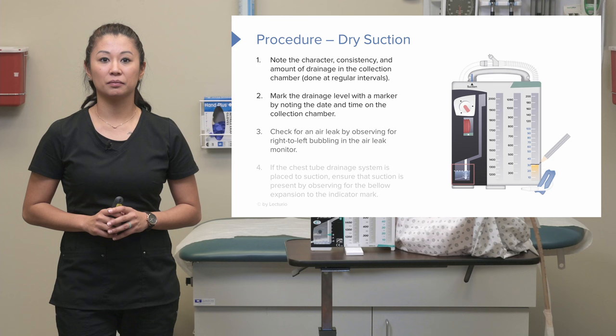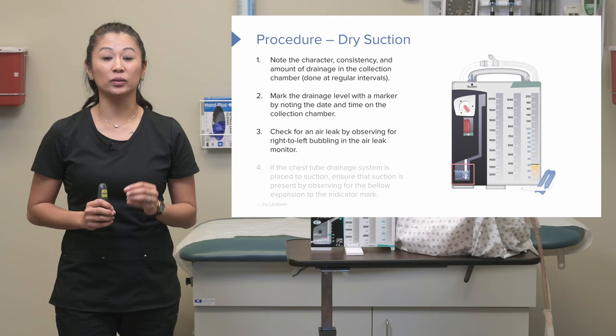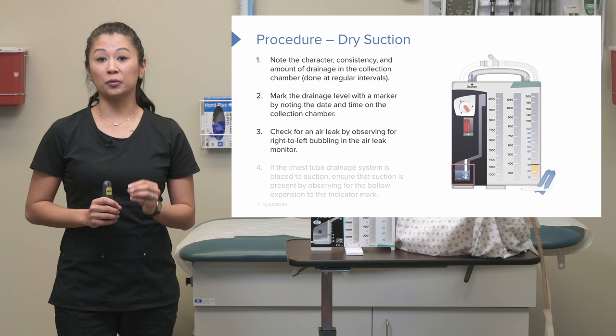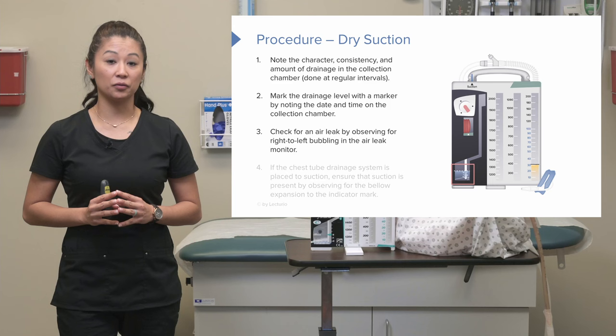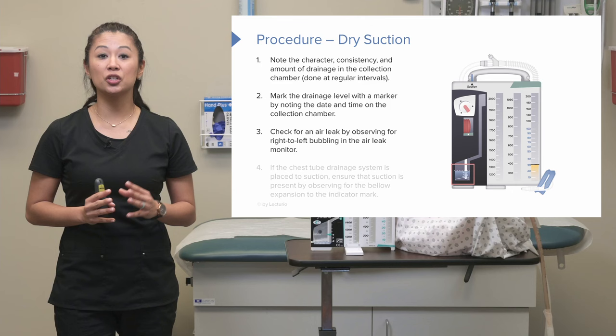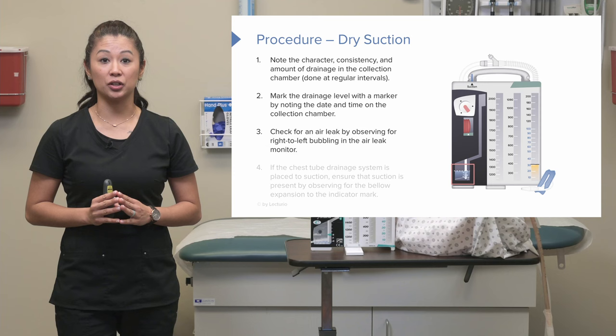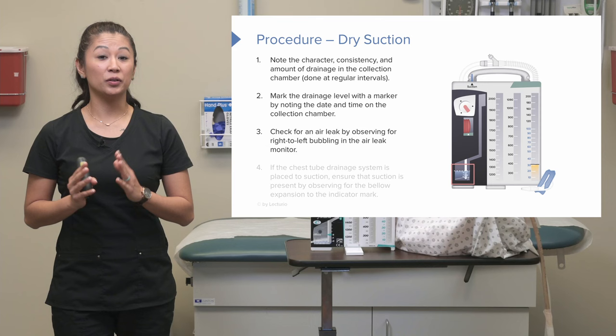The air leak monitor is a really important place to look on the dry system as well — just like the wet, the dry has one too. As a refresher: if you see bubbling from right to left in the air leak monitor, we need to call the physician. You can also check the severity of the air leak using the numbers on this monitor — one is low and five is high. The higher the number, the worse the air leak, so keep an eye on this.